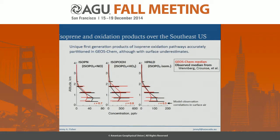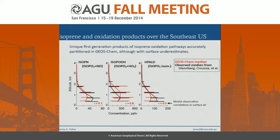We can also look at how we're doing with the chemistry using unique tracers of the different oxidation pathways for isoprene, all measured by the Wennberg group. Isoprene nitrates on the left reflect oxidation by NO; peroxides in the middle reflect the HO2 pathway; and aldehydes on the right reflect the peroxy radical isomerization pathway. We do a reasonable job representing the observations in the model, although there are some surface underestimates. The correlations in surface air are quite high, giving us reasonable confidence in the model's ability to partition the fate of the peroxy radical between these different pathways.